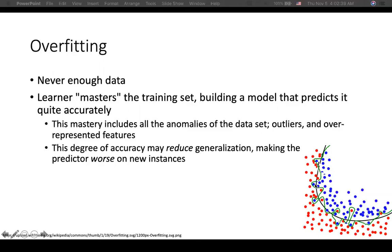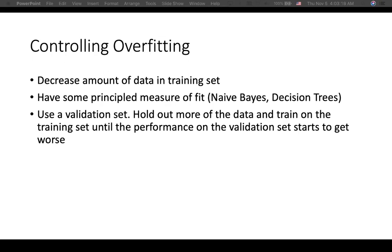The problem with a too-specific solution is that in the future, if you're going to have a new data point, it's not going to have the greatest performance or accuracy. So if we have a new dataset to test, we don't need to worry about the solution being too specific or not being able to categorize things correctly. How do we control overfitting? We can control overfitting by decreasing the amount of data in the training set, having some principled measures of fit such as naive Bayes and decision trees, and using a validation set — holding out more of the data and training until the performance on the validation set starts to get worse, and then we stop.